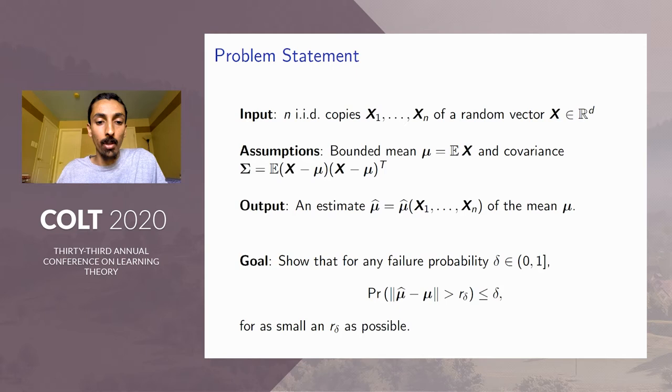Our goal here is to show that for any failure probability δ, the probability that ||μ̂ - μ|| is larger than r_δ is at most δ. And we want to achieve this kind of guarantee for the smallest confidence radius r_δ possible.